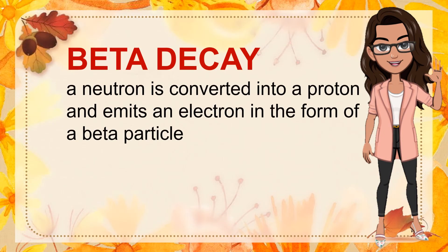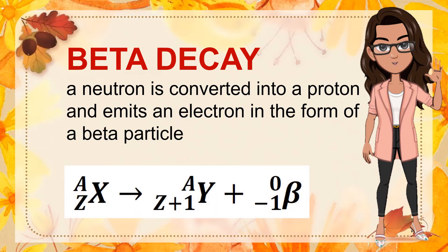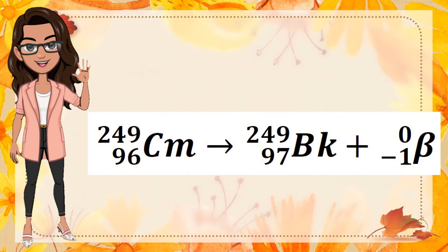In beta decay, a neutron is converted into a proton and emits an electron in the form of a beta particle. The atomic number goes up by 1 while its mass number remains the same. For example, curium-249 undergoes decay by beta particle emission to form berkelium-249. As shown in the balanced equation, the mass number remains the same at 249, and because we add 1 to 96, the resulting atomic number is 97.